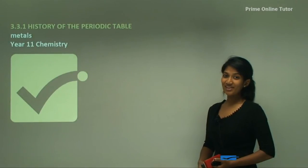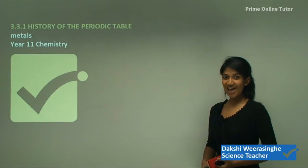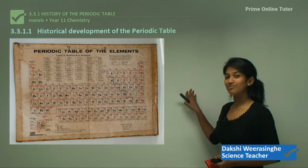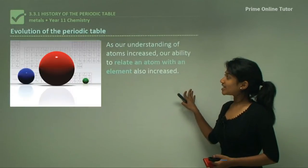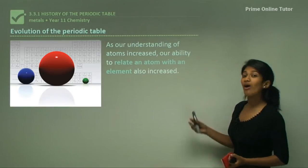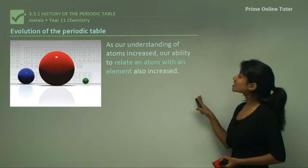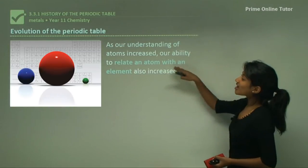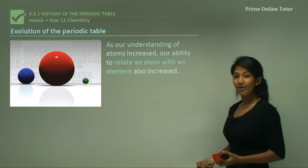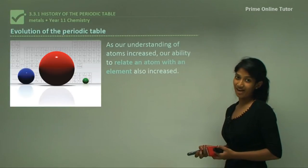Hi everyone. Today we'll be learning about the history of the periodic table, starting with its historical development. We'll look at the evolution of the periodic table and how our understanding of atoms increased, allowing us to relate an atom to an element. Today we know what an atom and element are, including their differences and similarities.